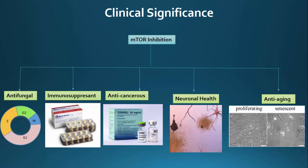People are optimistic about it, especially since rapamycin inhibition of mTOR delivers a 50% increase in C. elegans longevity and increases the lifespan of mice by 10-20%.